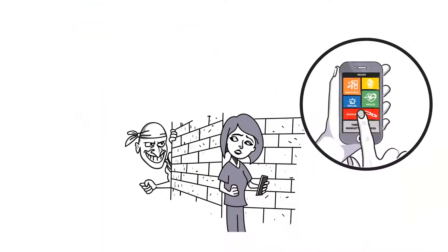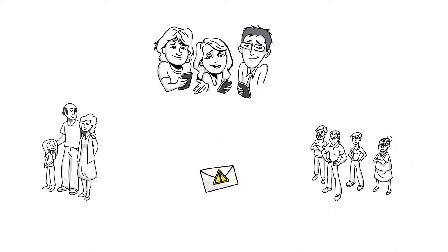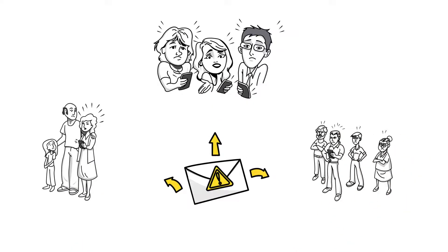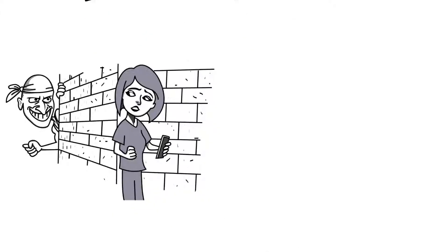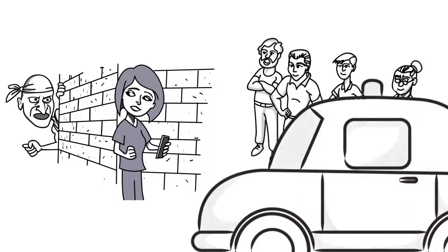Once an alert is sent, your family, friends, and the Secugo community you are a part of will receive an alert message with your status and location information. They can now call emergency services for help or come to you for assistance.